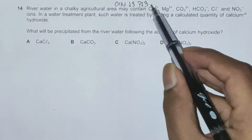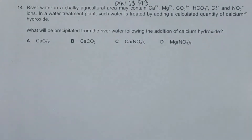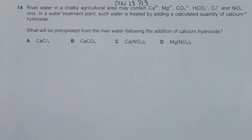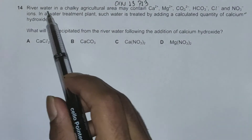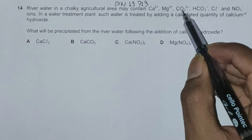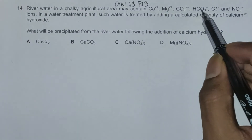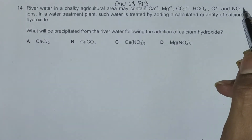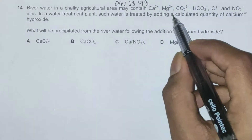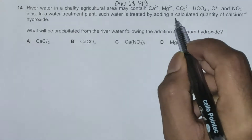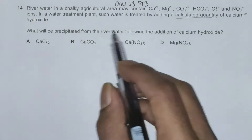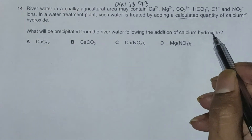This is a November 13 question paper, question number 14, concerned with Group 2. The question reads: river water in a chalky agricultural area may contain Ca²⁺, Mg²⁺, CO₃²⁻, HCO₃⁻, Cl⁻, and NO₃⁻ ions. In a water treatment plant, such water is treated by adding a calculated quantity of calcium hydroxide. What will be precipitated from the river water following the addition of calcium hydroxide?